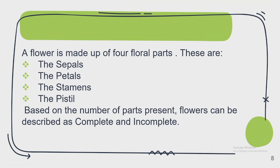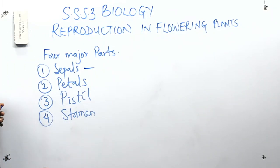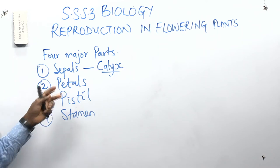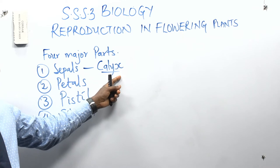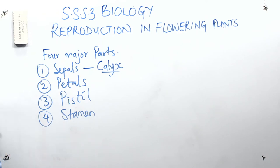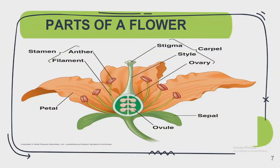Starting with sepals — don't be confused. When you come across the word 'calyx' in a textbook, a group of sepals is what we refer to as calyx. The sepals are the first part you see in a flower. Looking at the image, coming from the bottom, you see the sepals — in most flowers, they are green. The main function of the sepals is to protect the flower during the budding stage, acting like an envelope around the developing bud.